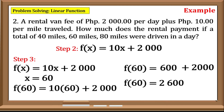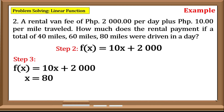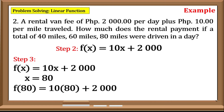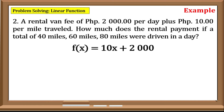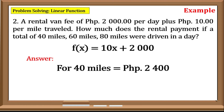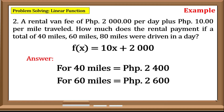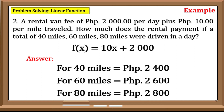Now let us have 80 for the value of x. f(80) = 10 times 80, plus 2000. Simplify: 10 times 80 equals 800, plus 2000, that is equal to 2800. So the cost of rental payment for 40 miles is 2400 pesos, 60 miles will be 2600 pesos, and 80 miles will cost 2800 pesos.